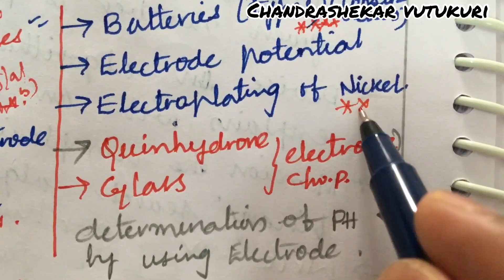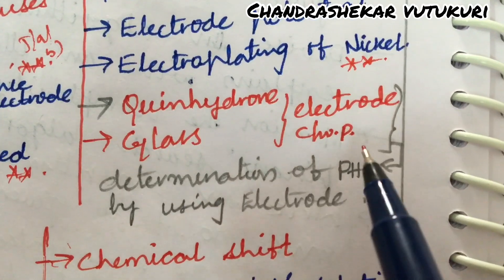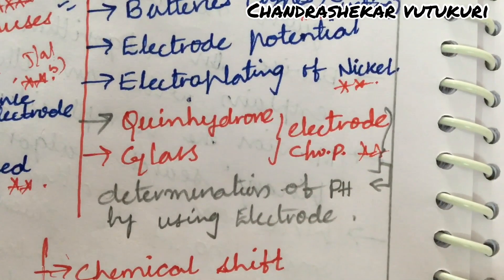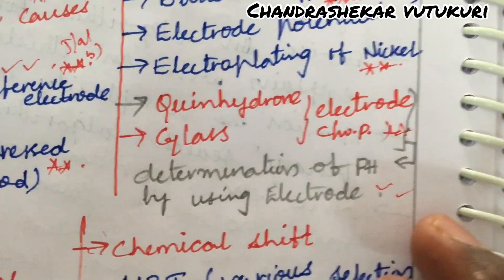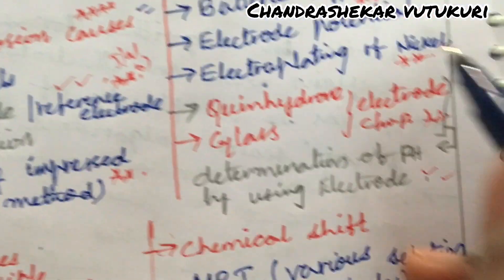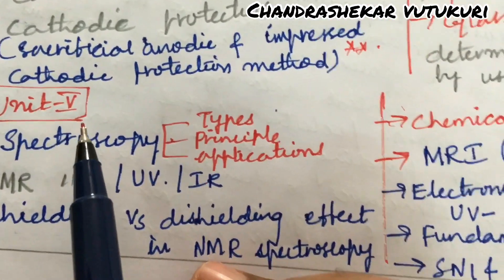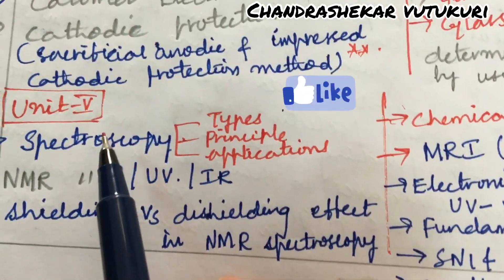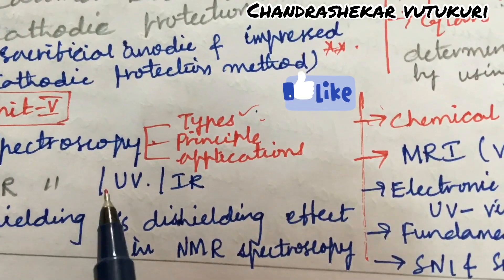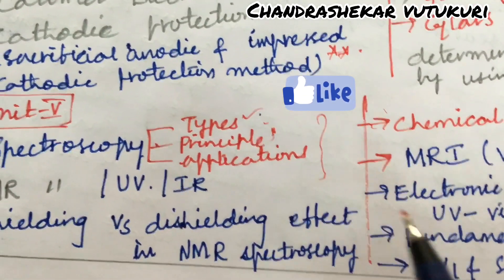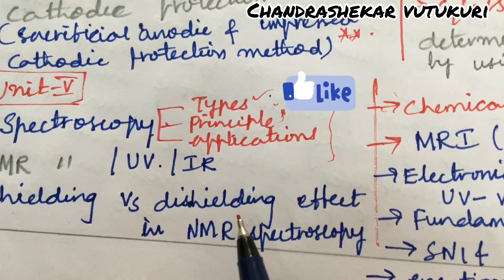Electroplating of nickel is also said to be one of the topmost questions, and the quinhydrone electrode — its working principle and construction — is said to be a topmost question. The determination of pH using an electrode is said to be very very important and a gunshot question, dear students. From this part you can expect 6-A as well as 6-B in the question paper. From the 5th unit you are going to get only one question, and that is all about spectroscopy and different types of spectroscopy like NMR, UV, and IR — their principles and applications — and do not expect a direct 15-mark question.